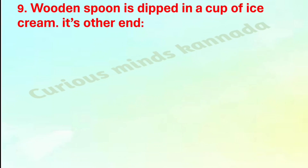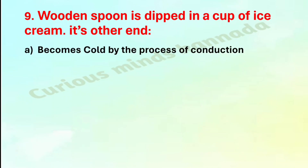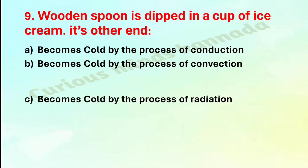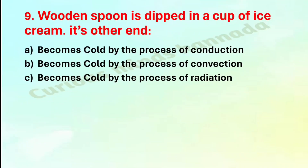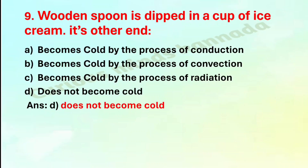Ninth question: a wooden spoon is dipped in a cup of ice cream. Its other end — option A: becomes cold by the process of conduction, B: becomes cold by the process of convection, C: becomes cold by the process of radiation, D: does not become cold. The correct answer is option D: does not become cold.